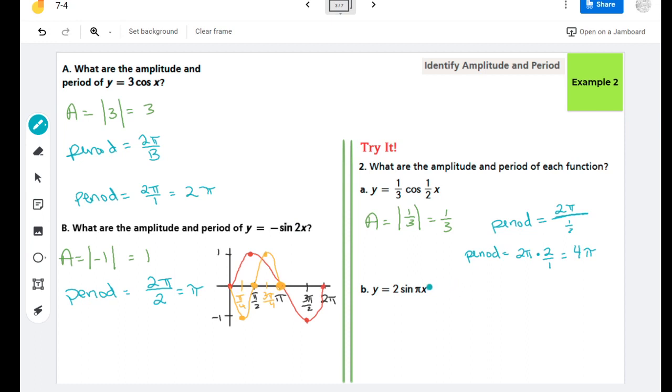Now for part B, our amplitude is the absolute value of the number in front, so our amplitude is 2. And our period in this case is 2π divided by our B value, which is π, so our period in this case is 2.